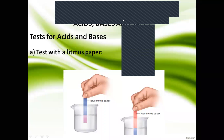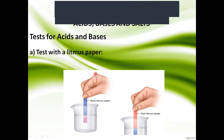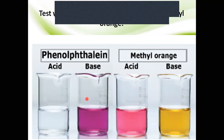Next we learn about tests for acids and bases. The first test uses litmus paper. If a substance turns blue litmus paper red, it is an acid. If it turns red litmus paper blue, it is a base. The next indicators are phenolphthalein and methyl orange.